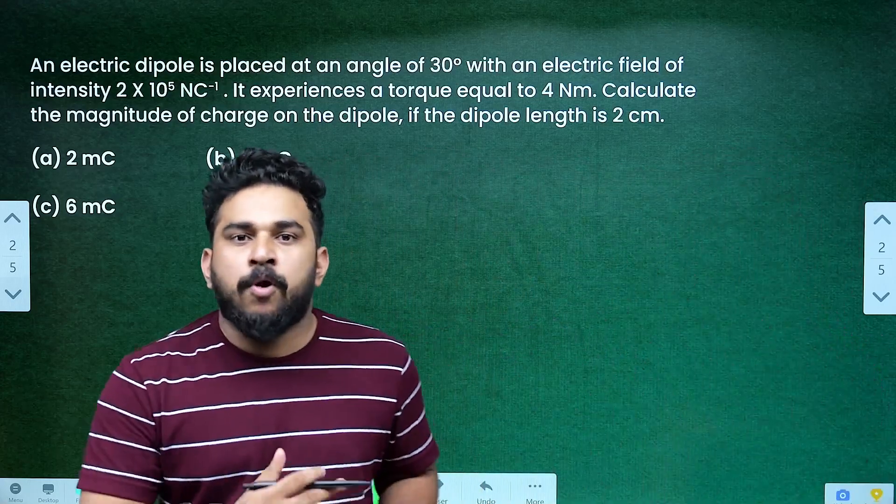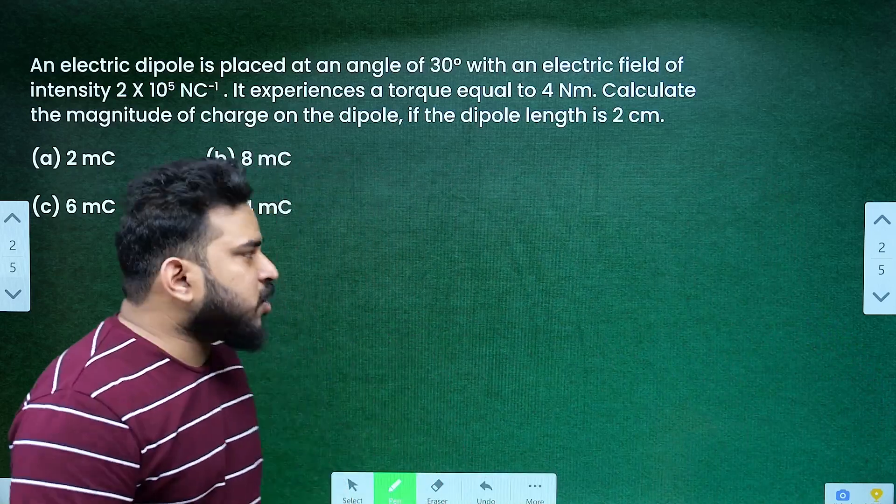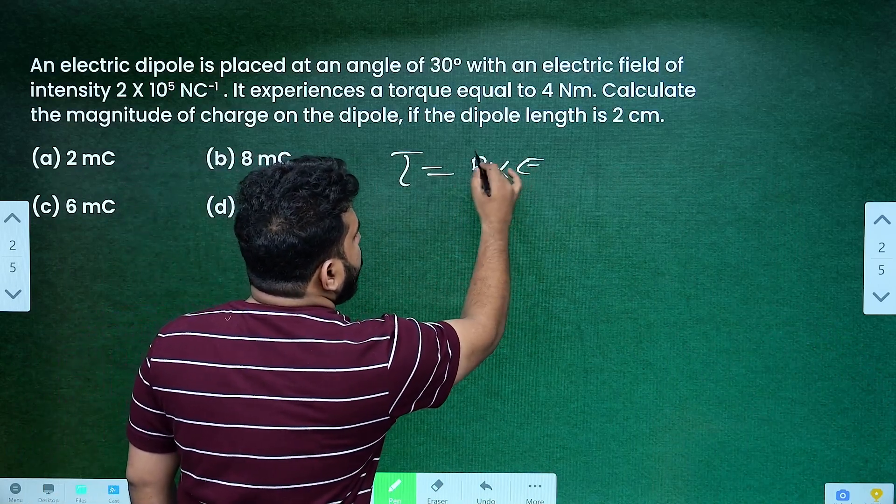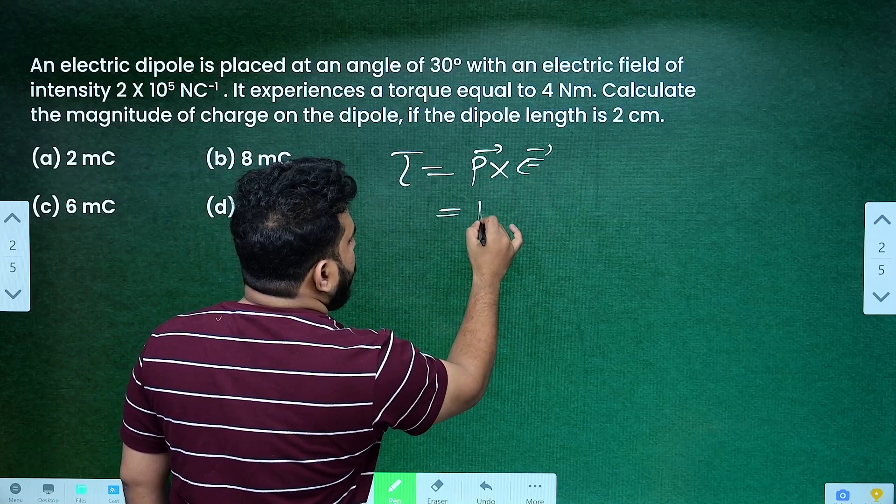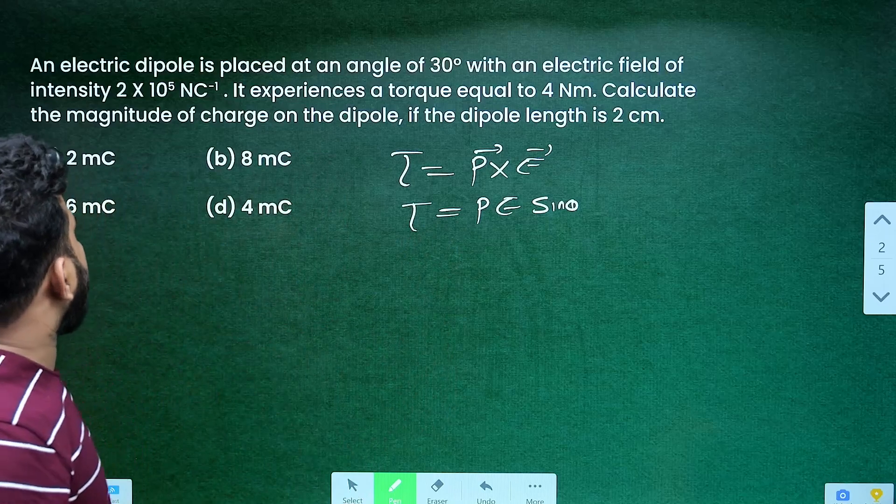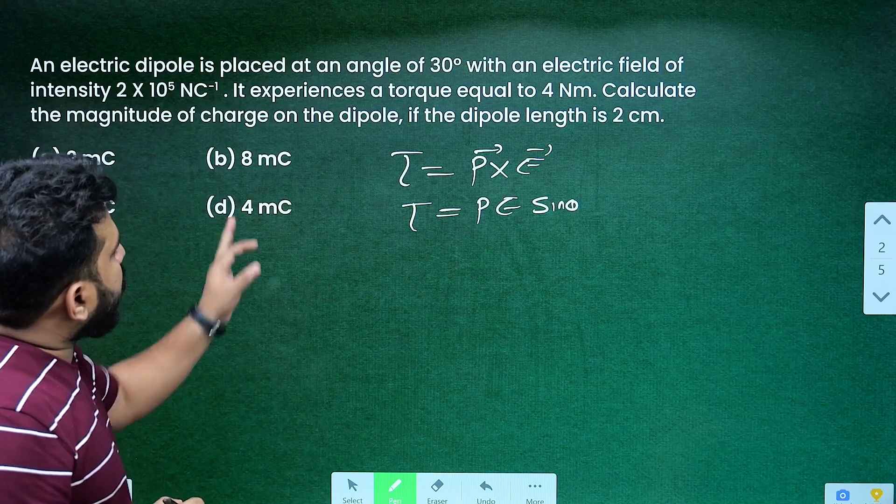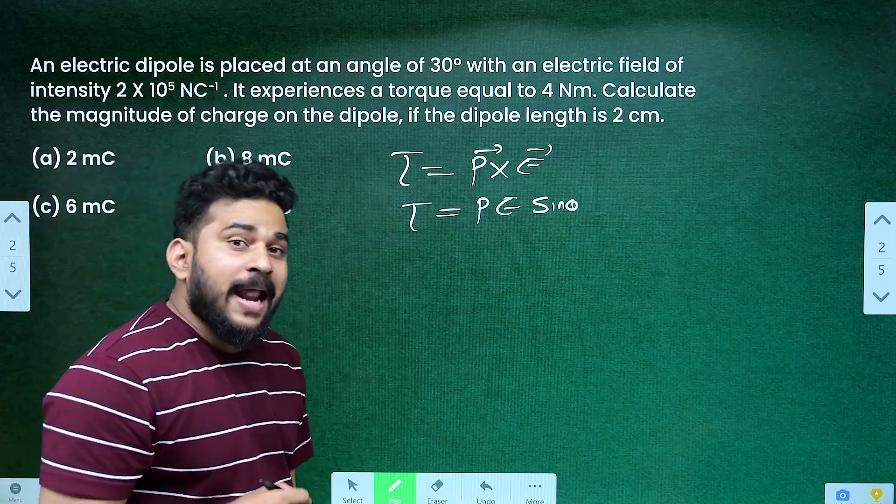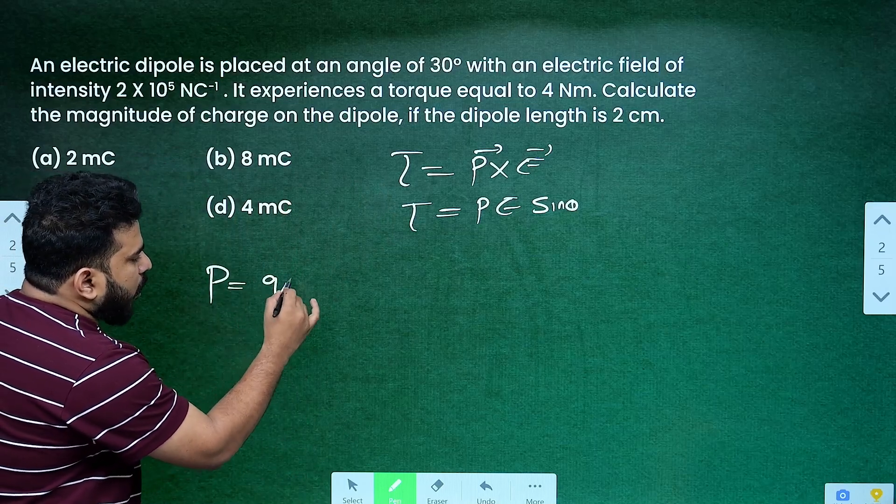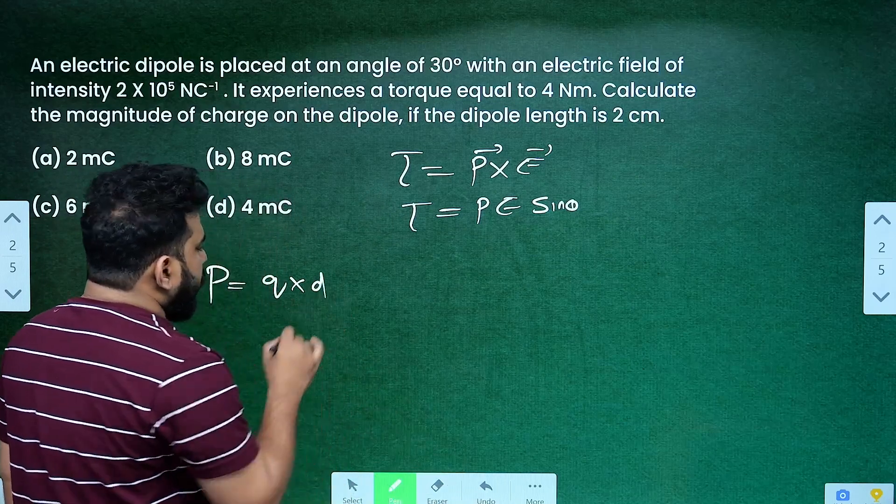What's the equation for dipole? When a dipole is located in an electric field, torque is equal to p cross E, or p E sin theta. Angle is given as 30 degrees, torque is given, electric field is given. What is the equation for dipole moment? Dipole moment is charge into distance, or q into d.